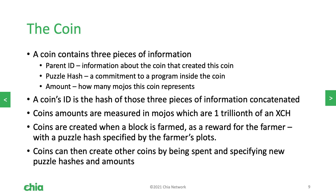As I mentioned before, coins contain puzzles, but more specifically they contain the hash of the puzzle because it's a smaller fixed size. They also contain their parent's identity and an amount of value that they're currently holding. The ID of a coin is defined by the hash of the parent ID, puzzle hash, and amount concatenated together. The value of amount is represented in mojo, not Chia. Mojos are comparable to Satoshis in Bitcoin, but they represent one trillionth of a Chia.